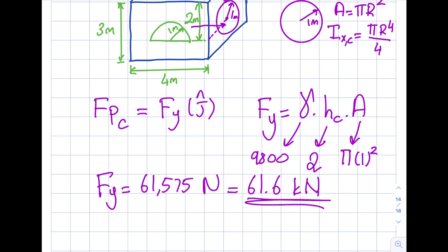And if I go ahead and write this in kilonewtons, I will get myself 61.6 kilonewtons, so this is the answer for the Fpc. And if I write it properly my Fp circular will be 61.6 kilonewton in the j direction.